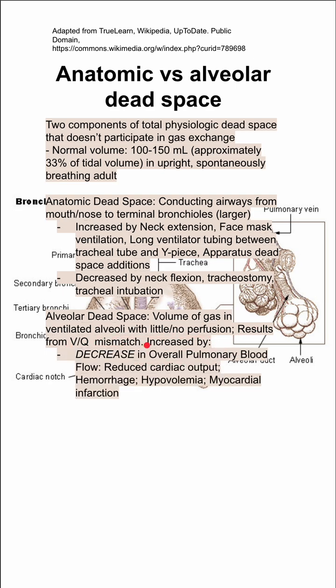You can increase your alveolar dead space by decreasing overall pulmonary blood flow. If you have an increase in your alveolar dead space by decreasing overall pulmonary blood flow, it makes sense.